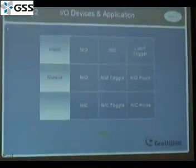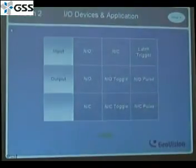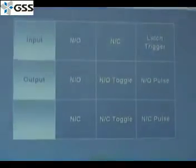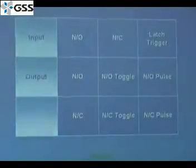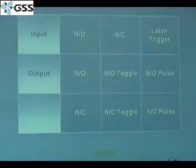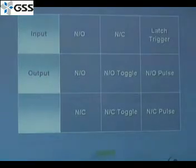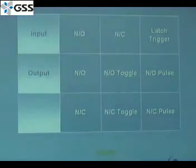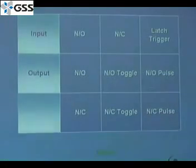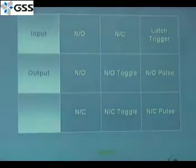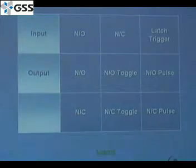There are several different signal types for both input and output signals. On the input side, we have normal open state, normal closed state, and you can use latch triggers on both of them. On the output side, we also have normal open and normal closed state. We also have toggle and pulse state, and here I'll show you what that means.